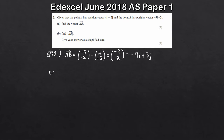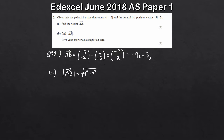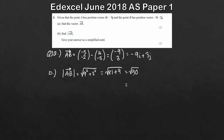That's just the vector AB. And then for part B, we want to find the magnitude of AB — the length. We take the square root of each term squared. So we're taking the square root of minus 9 squared plus 3 squared — squaring removes the negative — so that's 9 squared plus 3 squared. 9 squared is 81, 3 squared is 9, so that's root 90. Simplifying: root 9 times root 10, and root 9 is 3, so this is 3 root 10.